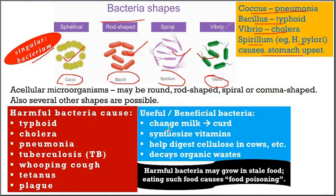Some bacteria are useful or beneficial. For instance, Lactobacillus changes milk to curd. Bacteria also make vitamins in the body, help digest cellulose in animals that eat grass and leaves, and help in the decay of organic wastes — what we call biodegradable matter. Biodegradable means it can be degraded or decayed by bacteria and the useful elements returned to the environment.